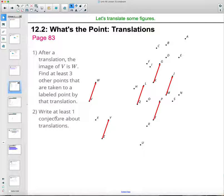And then write at least one conjecture about translations. So looking at each of these, write at least one thing about what you're noticing. Maybe it's that these look like they're parallel to each other. That's something that somebody said in class about just guessing. Will these translations be parallel to each other? How will this work?